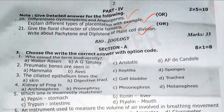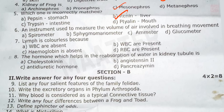Now the zoology section with eight one-mark questions. First, who coined the term biodiversity? Option A. Next, premaxillary bones are seen in — Option B. Next, the ciliated epithelium lines — Option D. Next, the kidney of frog is — Option C. Next, which one is incorrectly matched? Option E. Next, an instrument used to measure the volume of air involved in breathing movements — Option A.